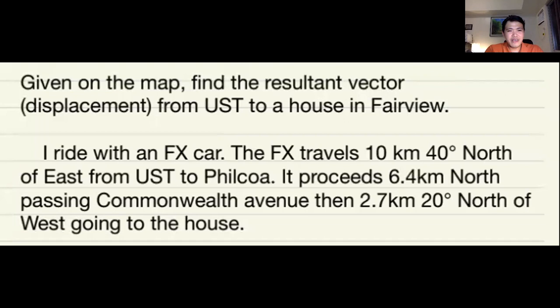So I ride with an FX car from UST—I commute. The FX travels 10 kilometers 40 degrees north of east from UST to Philcoa, and then it proceeds about 6.4 kilometers north passing Commonwealth Avenue. I just approximate it as a straight line, although it's a little bit rough, but let's simplify that. Then it passes about 2.7 kilometers north of west going to that house, to that area where I live.